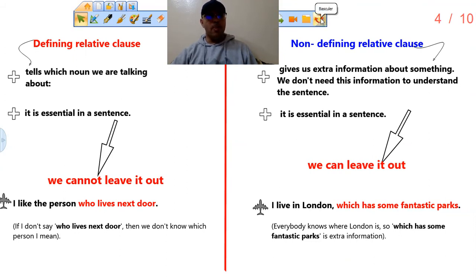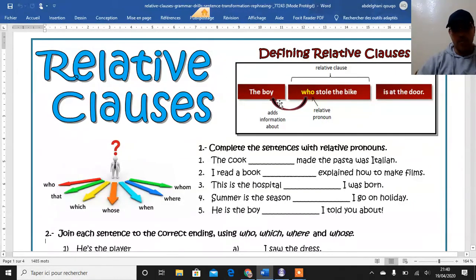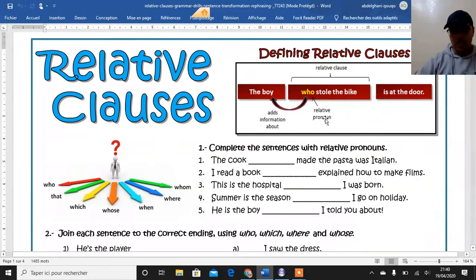Now we will move to talk about relative clauses and non-defining relative clauses in more detail, just to have a clear idea and to do practice about this lesson. Now we will do some practice about defining and non-defining relative clauses. Let's start with defining relative clauses. Here we have an example: "The boy who stole the bike is at the door." The boy — which boy are we talking about? Who stole the bike. This sentence identifies which boy we are describing or talking about. So "who stole the bike" is the relative clause, and this is a defining relative clause.